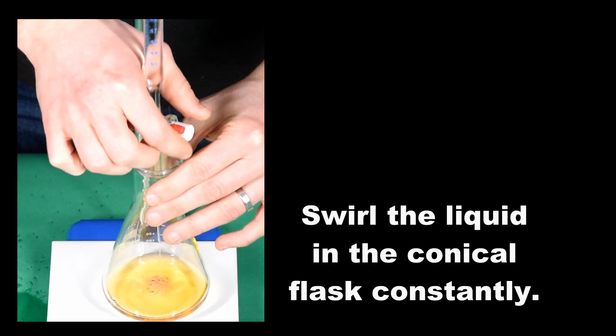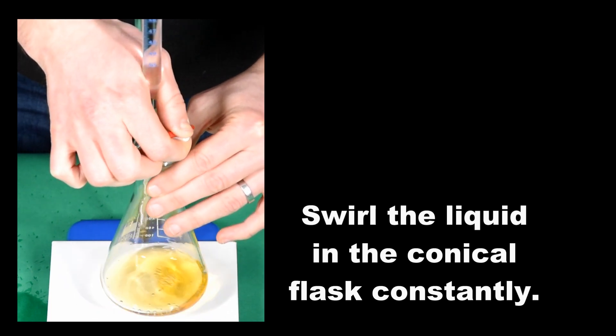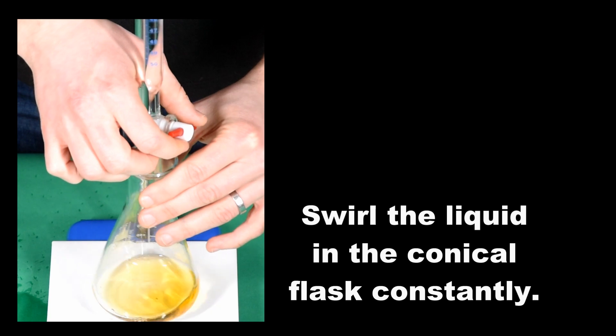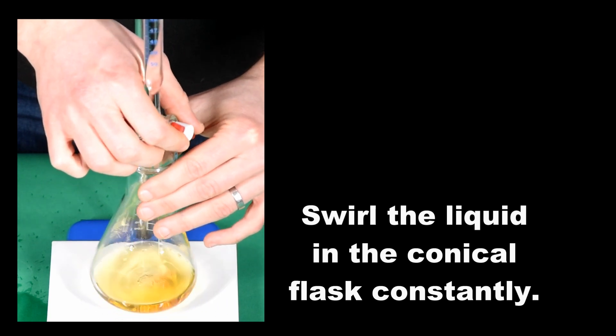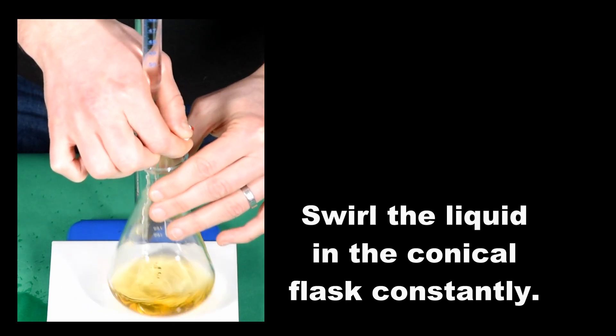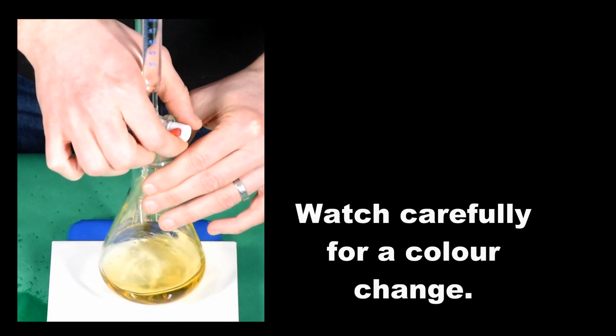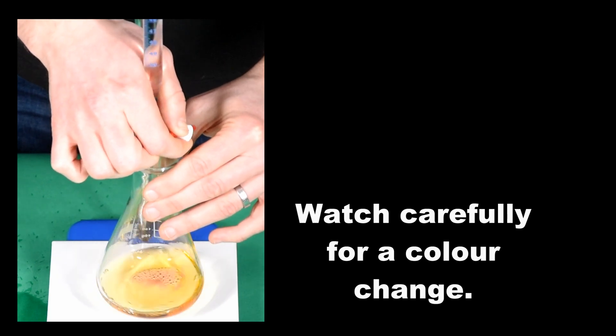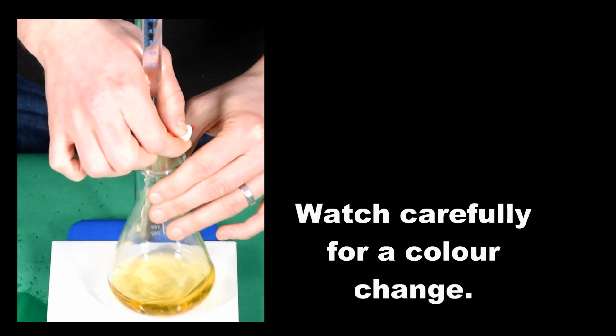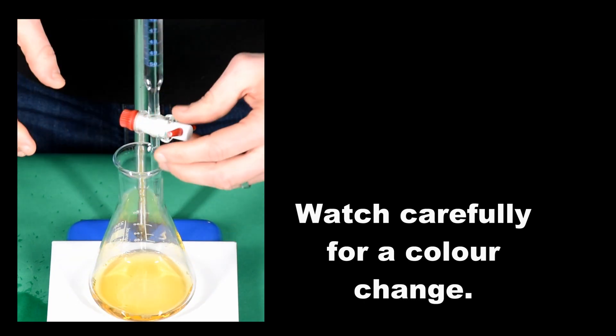Just as an aside, you can tell that the person doing the titration is a chemist by the way he grips the tap. Older burettes had ground glass taps, and they had a habit of falling out. So, you control the tap from the wrong side, if you like, in order to stop the tap from falling out. And with modern burettes, it means you're less likely to break off the end of the glass.